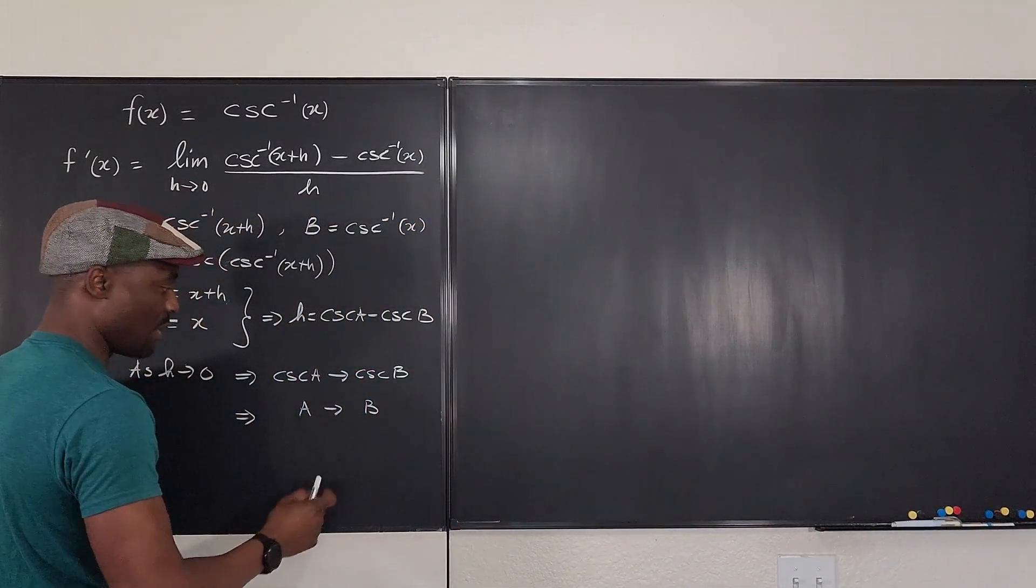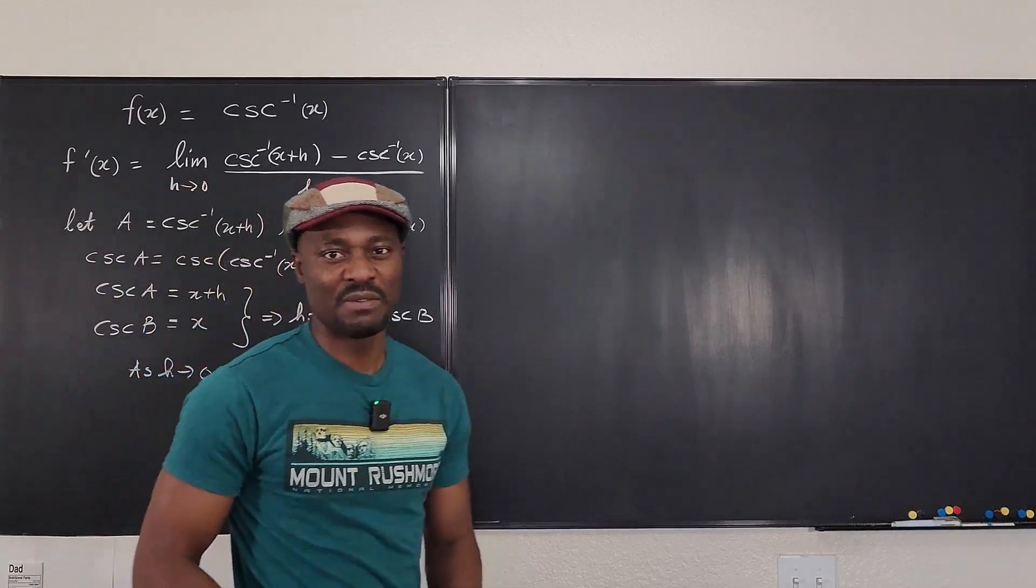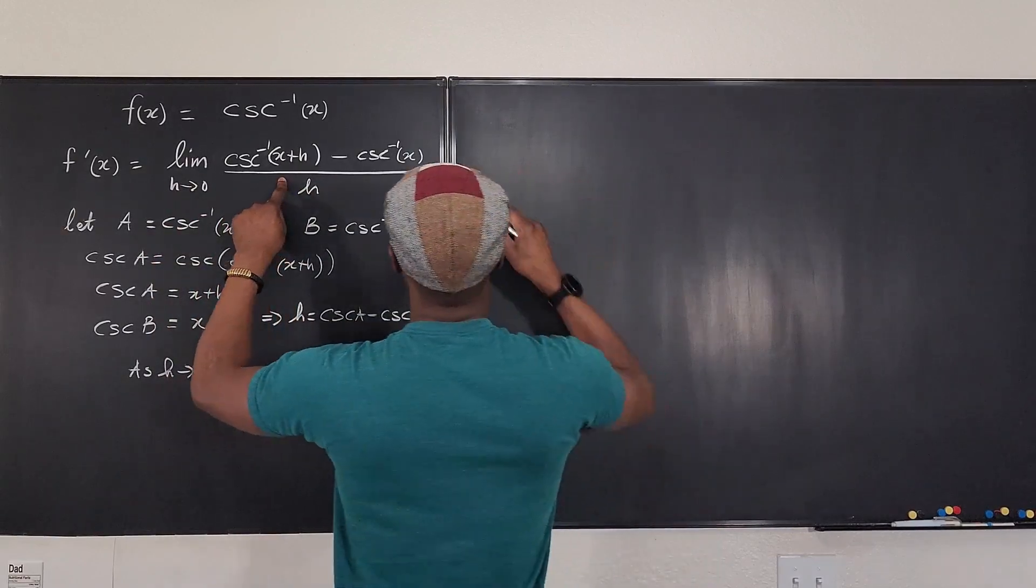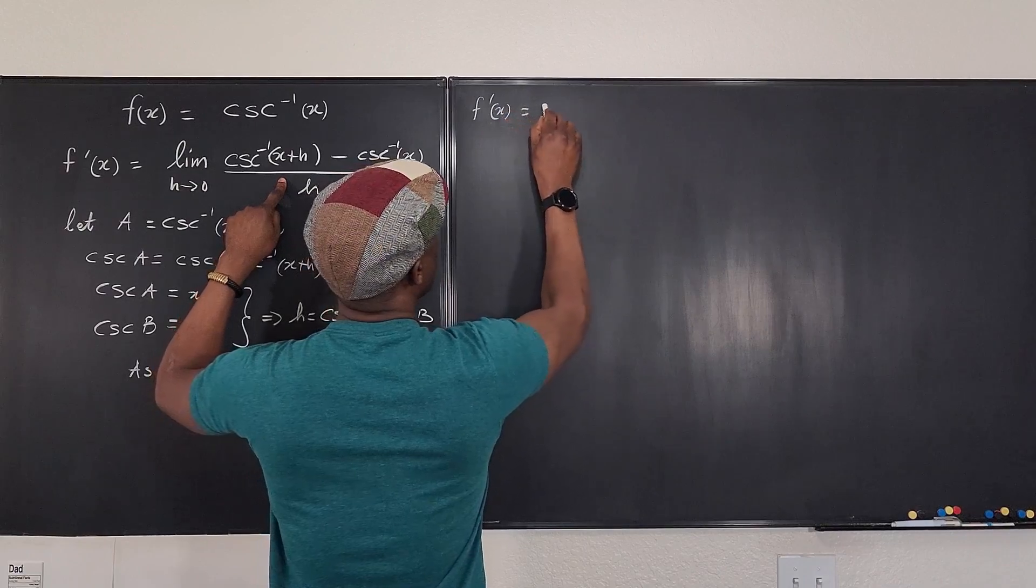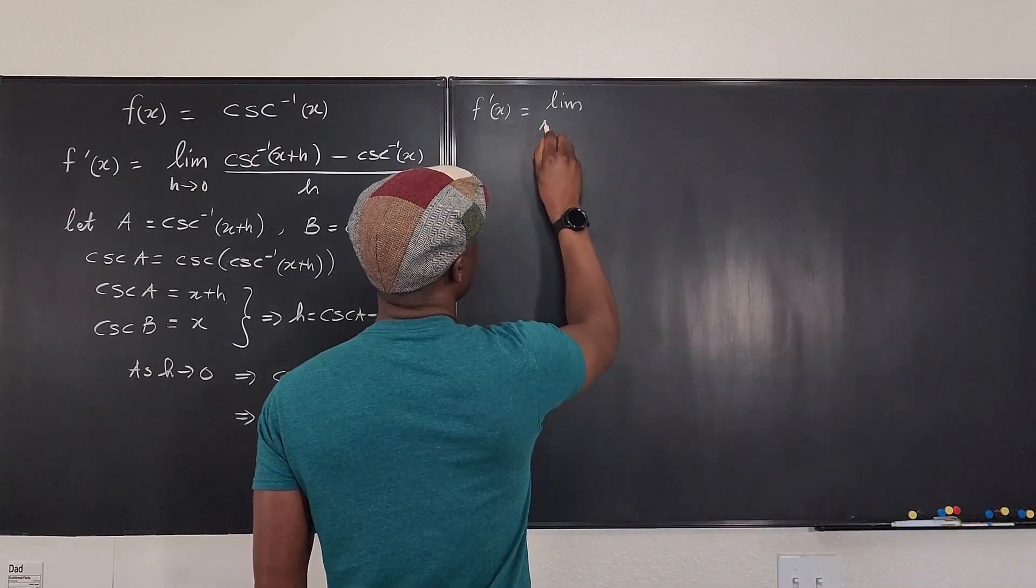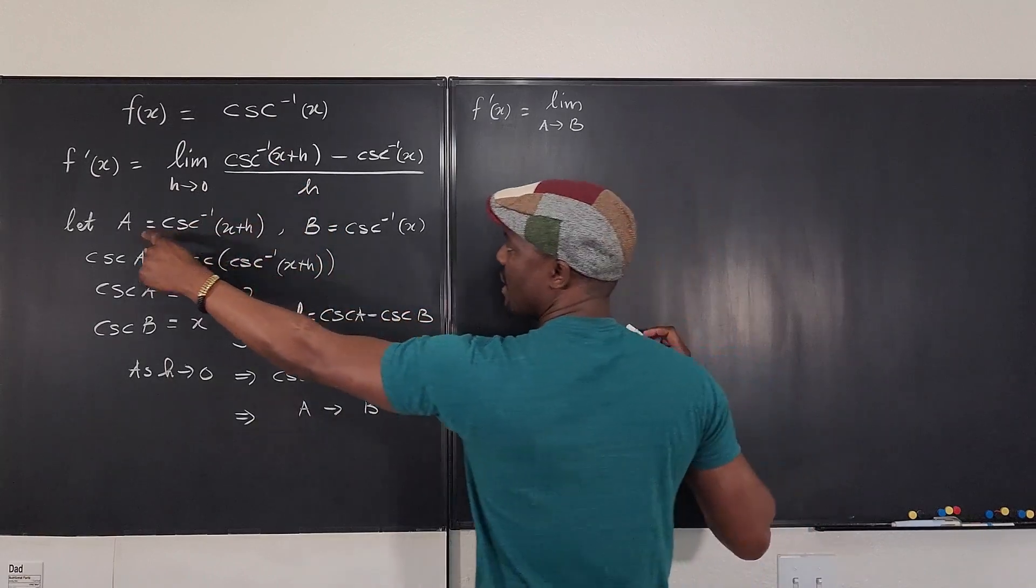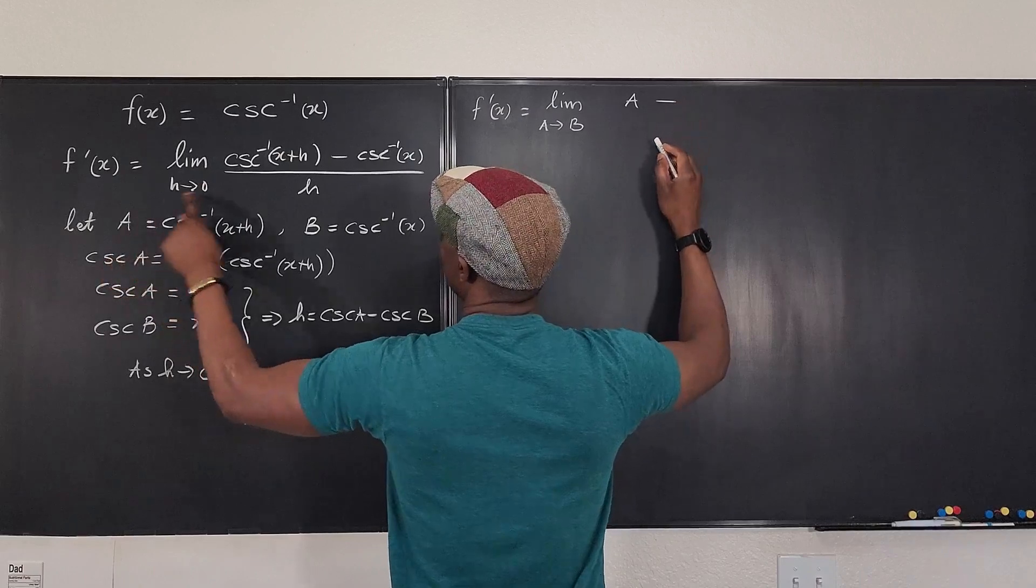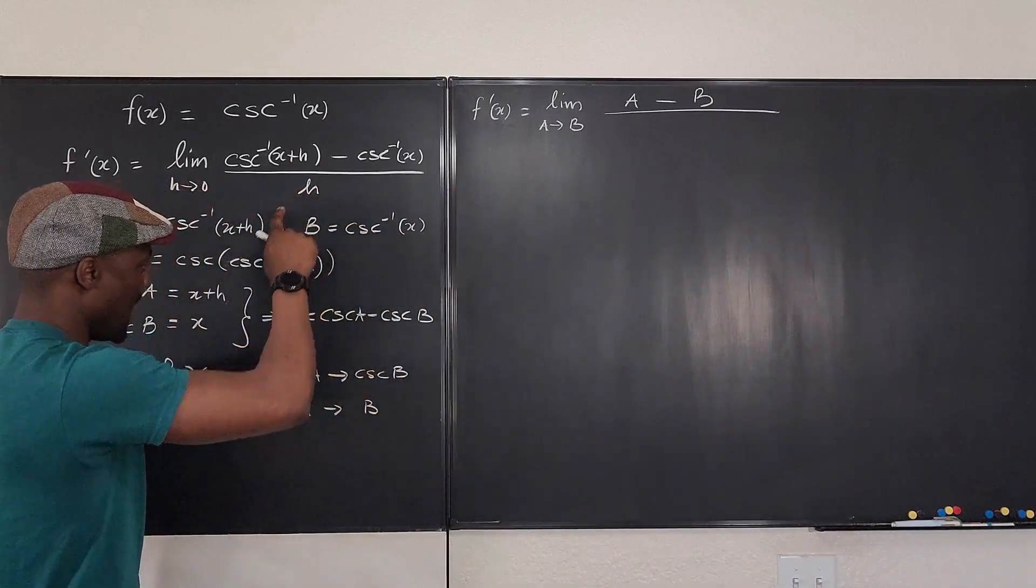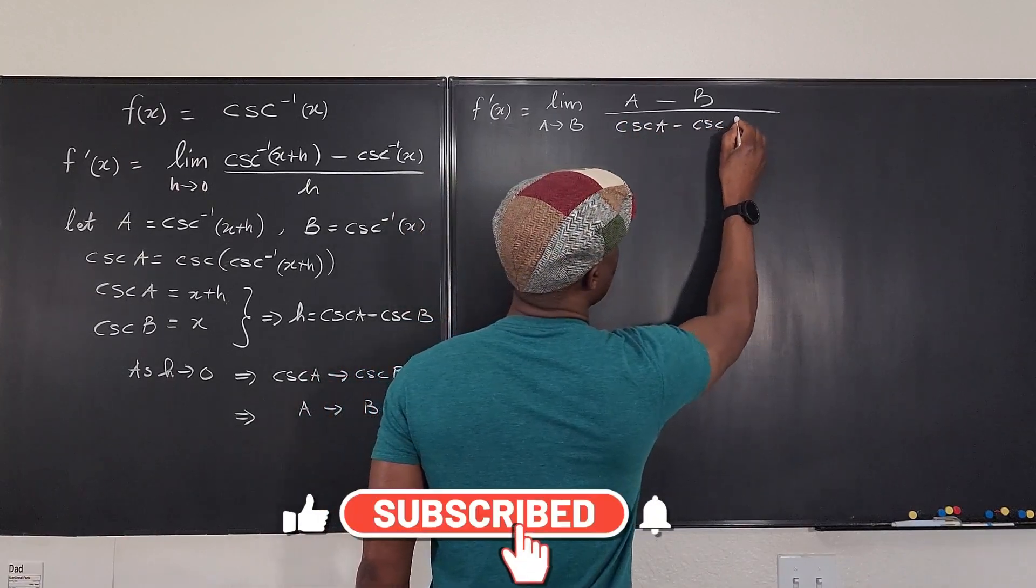Whichever you choose in this case will work, but I'm going to choose this. Instead of writing as h goes to zero, I'm going to say as a goes to b. That's a simplified form. So now let's go back to this and rewrite this expression. So this expression is going to be f prime of x is equal to the limit, instead of writing h goes to zero, I'm going to write as a goes to b.